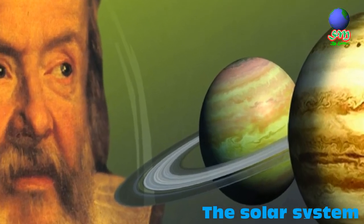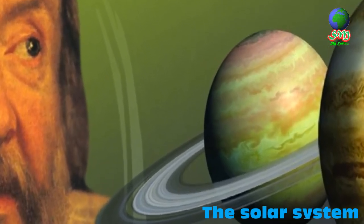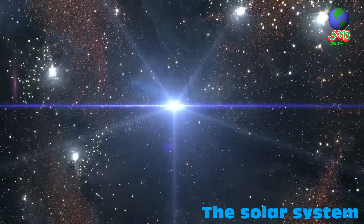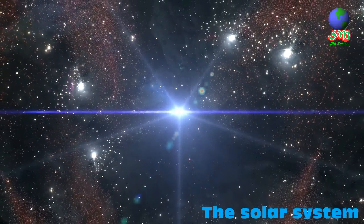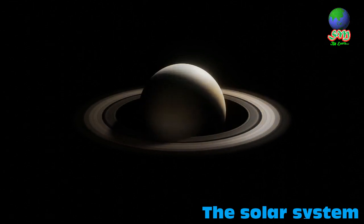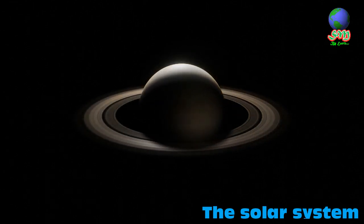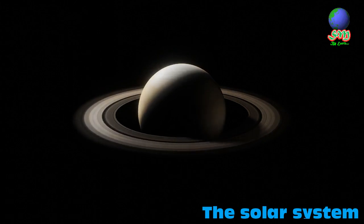In the 17th century, Galileo Galilei discovered the first sunspots and the four natural satellites of Jupiter. Following in his footsteps, Christian Huygens discovered Saturn's moon Titan and the special shape of Saturn's rings.